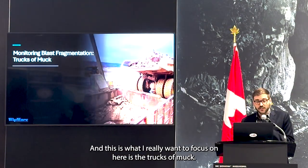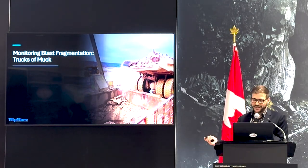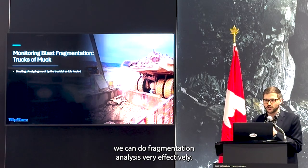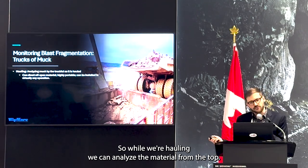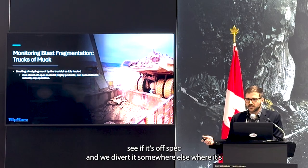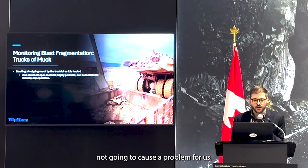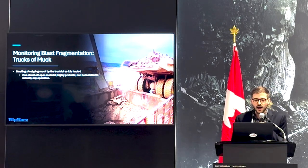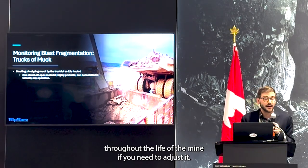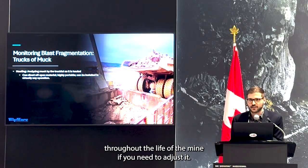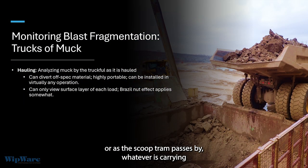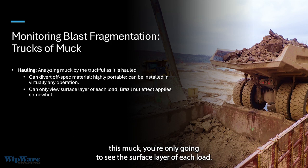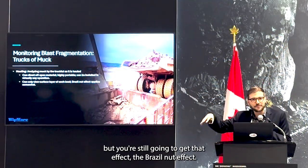Here's another place we can do it, and this is what I really want to focus on: the trucks of muck. When we are hauling and when we are dumping, we can do fragmentation analysis very effectively. While we're hauling, we can analyze the material from the top. This is great because we can see the material, see if it's off spec, and divert it somewhere else where it's not going to cause a problem. You can install something like this virtually in any operation, move it around throughout the life of the mine. But you're only going to see the surface layer of each load.